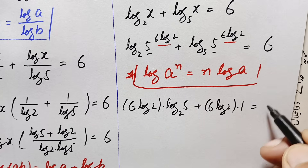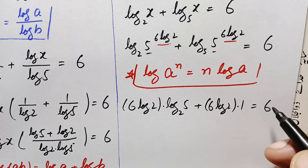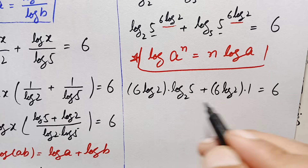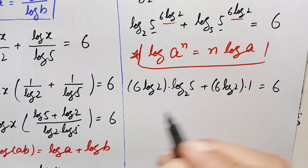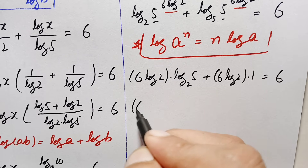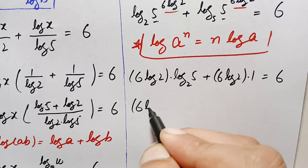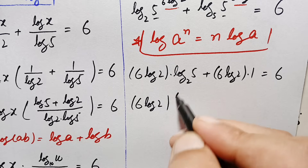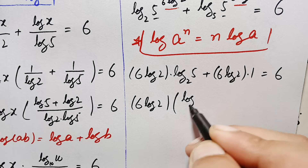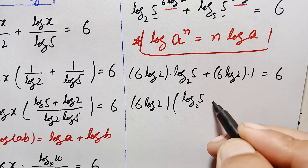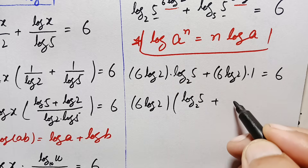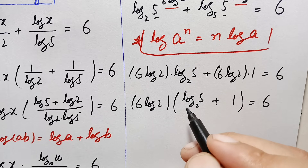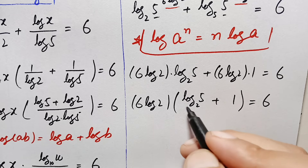Now 6 times log of 2 is common in both terms on the left hand side. Taking 6 times log of 2 common, this becomes: 6 times log of 2 times (log of 5 with base 2 plus 1) is equal to 6.